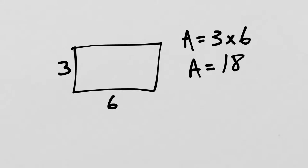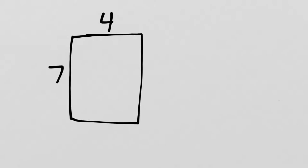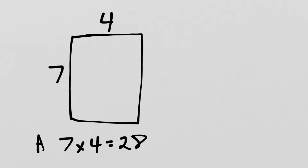That's going to become more and more true in fourth and fifth grade, so it's really a good idea to work very hard on memorizing those now. Here's a 4 by 7 rectangle, so we would solve this with 7 times 4 or 4 times 7, which equals 28, and that would be the area of this rectangle.